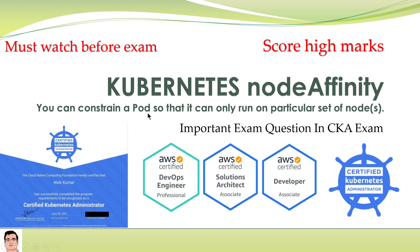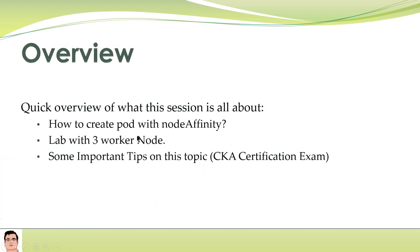You can constrain a pod so that it can only run on a particular set of nodes. In this session we are going to learn about node affinities - how we can assign a hard preference using operators. We will see the differences for the affinity. In this overview we are going to learn how to create a pod using node affinities, playing with three focal nodes each having its own label.